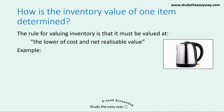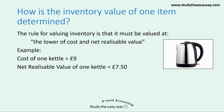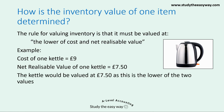Let's have a look at an example of this, focusing on the kettle. The cost of one kettle was £9, and its net realisable value, £7.50. The kettle would be valued at £7.50, because this is the lower of the two values. In other words, we look at the cost — £9 — and the net realisable value — £7.50 — and simply choose the lower of the two values to be the kettle's inventory value. Please remember that this rule is really important, and you do need to learn it, be able to state it and use it.